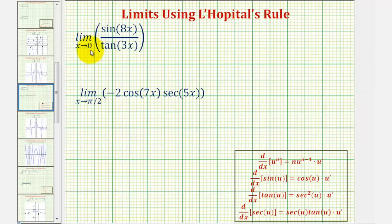We want to find the limit as x approaches zero of sine 8x divided by tangent 3x. As x approaches zero, the numerator approaches sine zero and the denominator approaches tangent zero, which are both equal to zero. So we say this limit has the indeterminate form of zero divided by zero.